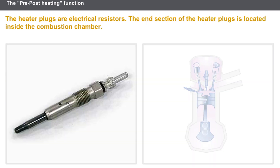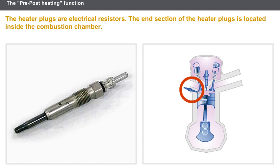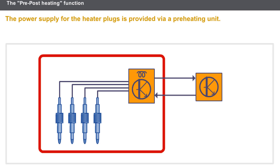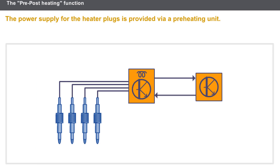The heater plugs are electrical resistors. The end section of the heater plugs is located inside the combustion chamber. The power supply for the heater plugs is provided via a preheating unit. The injection computer sends a control signal to the preheating unit, and the preheating unit supplies the heater plugs with power.